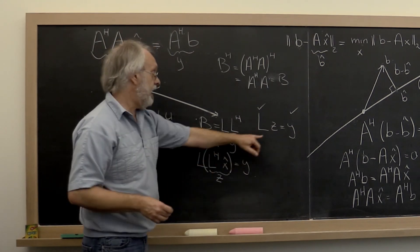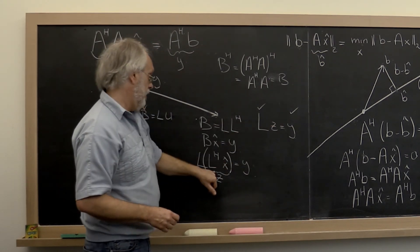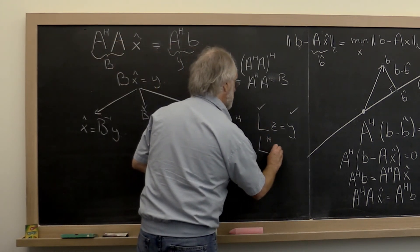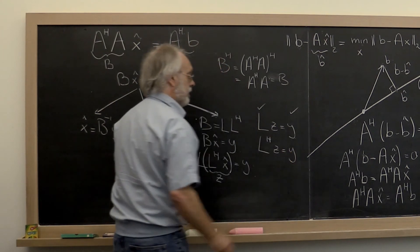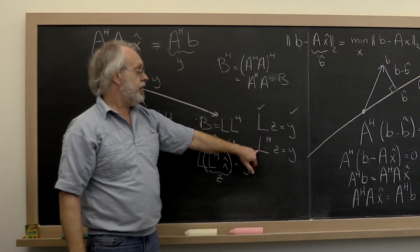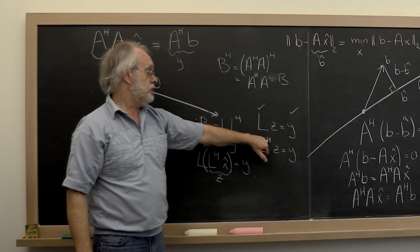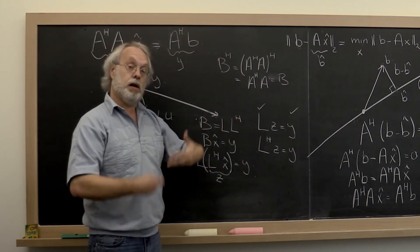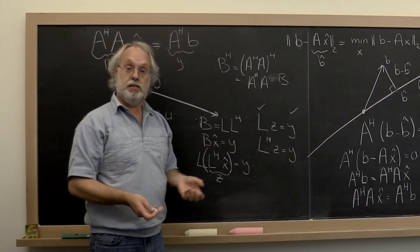And then once you have your vector Z, you remember that L Hermitian transpose times X hat is equal to Z. But notice that the lower triangular matrix, when you compute its Hermitian transpose, gives you an upper triangular matrix. And solving with an upper triangular matrix is relatively easy as well.